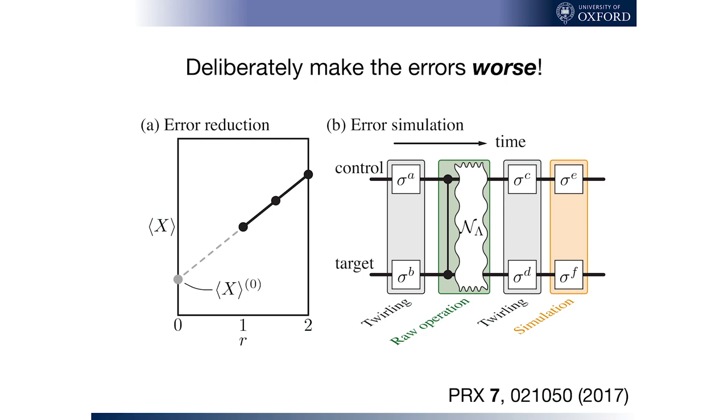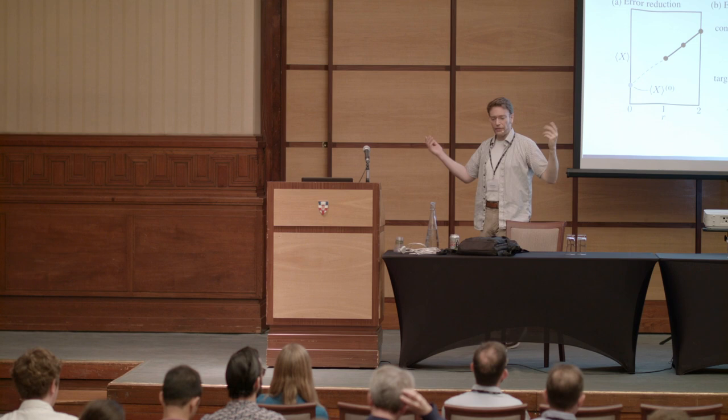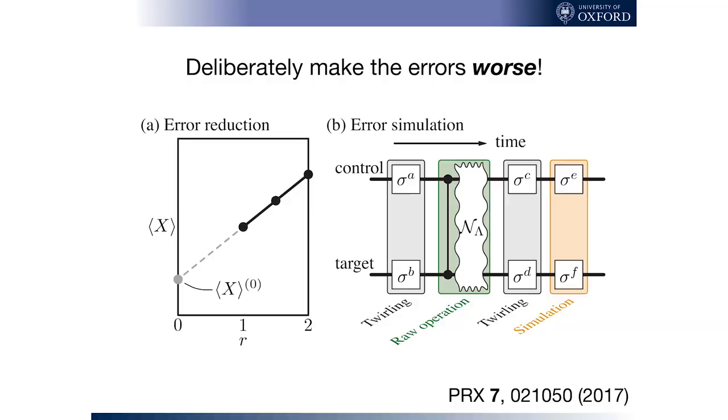But instead of doing that, what we would argue you should do is sample half the time at this point. Let's say you're willing to do 10,000 runs of your system. So run 5,000 at that point, and then deliberately make the errors worse, counterintuitive as that sounds. Deliberately, don't alter the nature of the noise, but allow it to be more severe, and do it again.